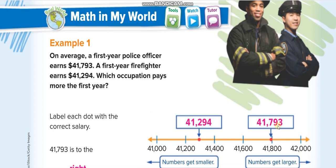Now we compare the two numbers to find which is greater, by checking place values. The ten-thousands digit: both have four — the same. The thousands digit: both have one — the same. At the hundreds place, the first number has two and the second has seven. Since seven is greater than two, forty-one thousand seven hundred ninety-three is the greater number.